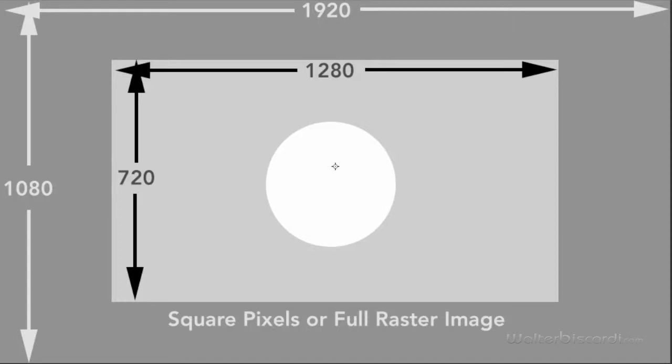As a video editor, it's very important for you to understand the difference between square pixels or full raster image and anamorphic, which is a squished image.